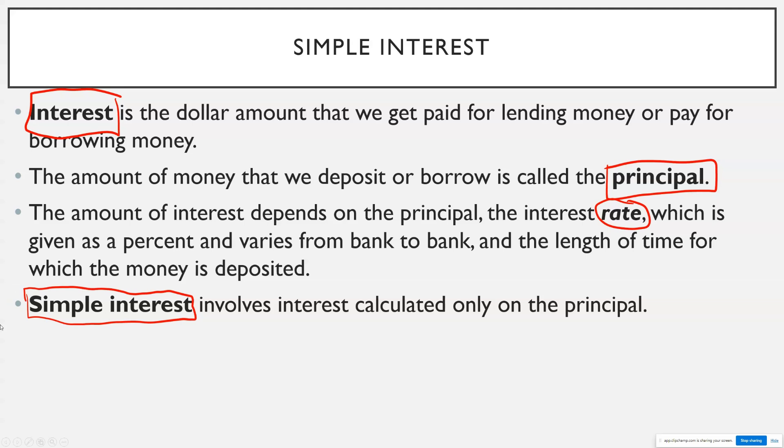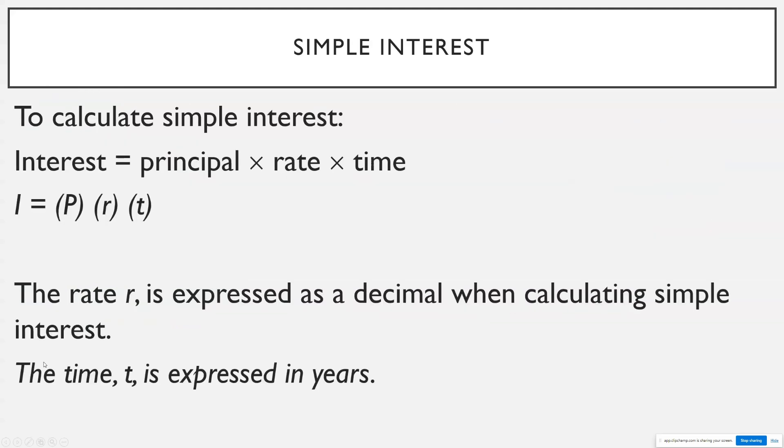So there's going to be two formulas in this quick review, and then we'll work a problem for each. To calculate simple interest, to figure out how much interest you are owed or paid, interest is equal to the principal, so how much you deposit or borrow, times whatever the interest rate is times the time. So I'm going to denote it as I for interest, P for principal, lowercase R for the interest rate and lowercase T for the time.